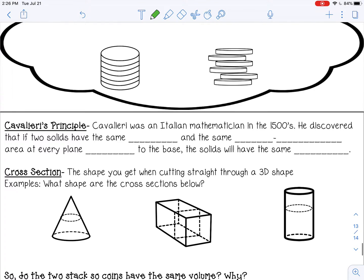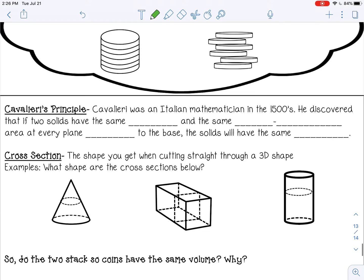All right, so let's talk about Cavalieri's principle. So Cavalieri was an Italian mathematician in the 1500s and he discovered that if two solids, so two three-dimensional shapes, have the same height and the same cross-sectional area at every plane parallel to the base, the solids will have the same volume.